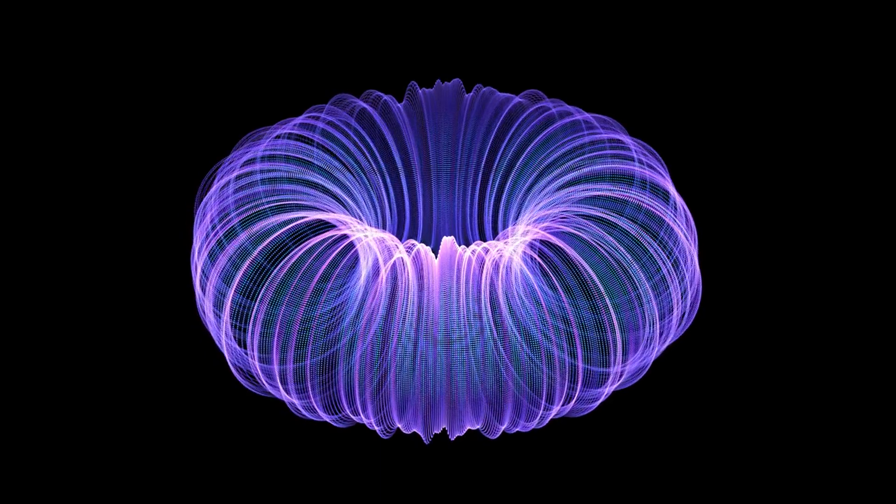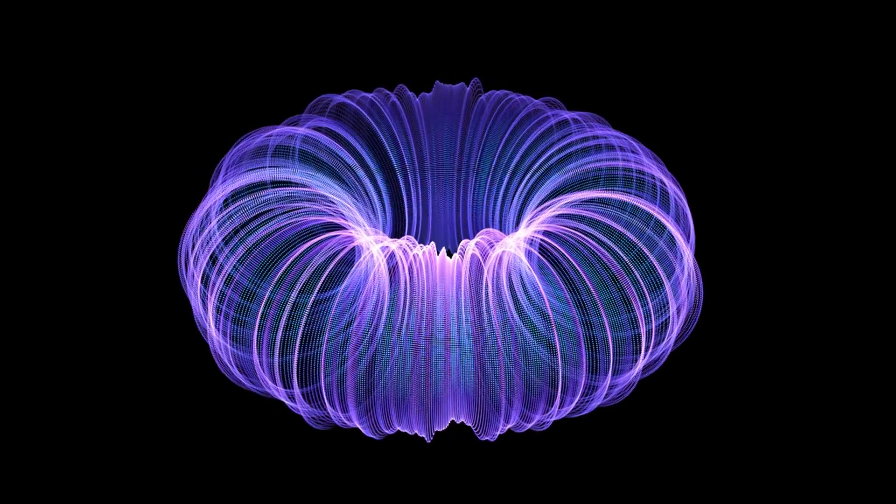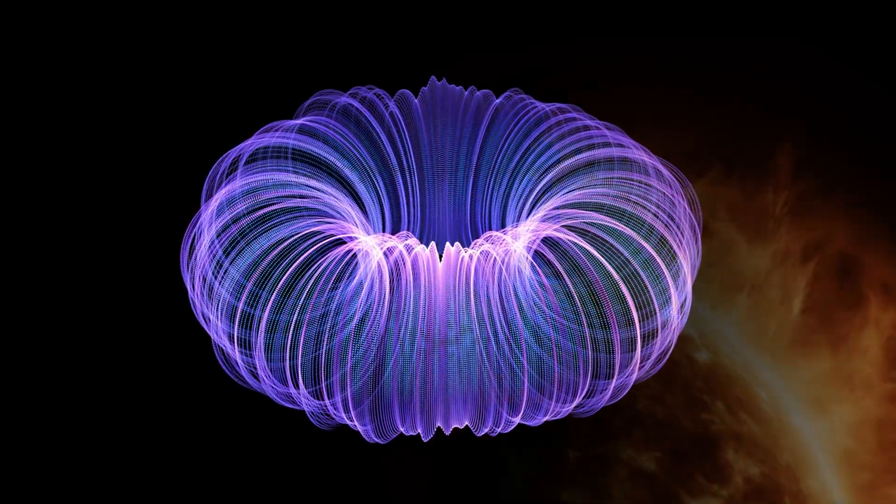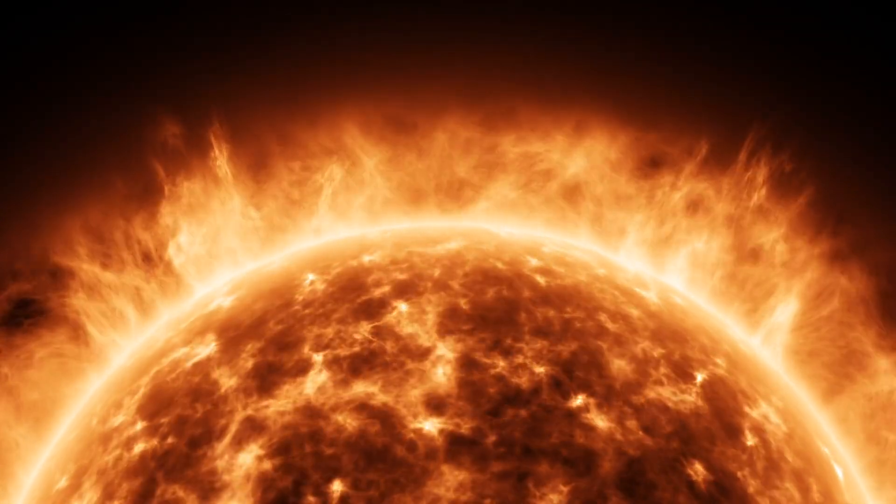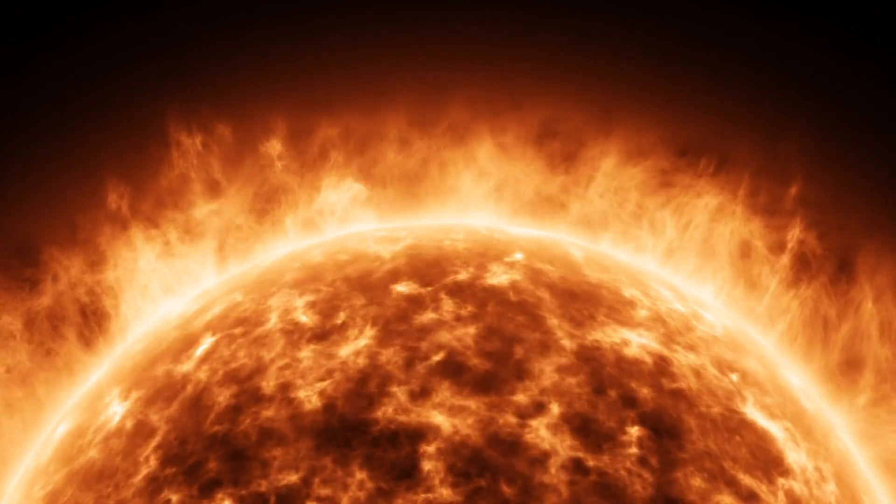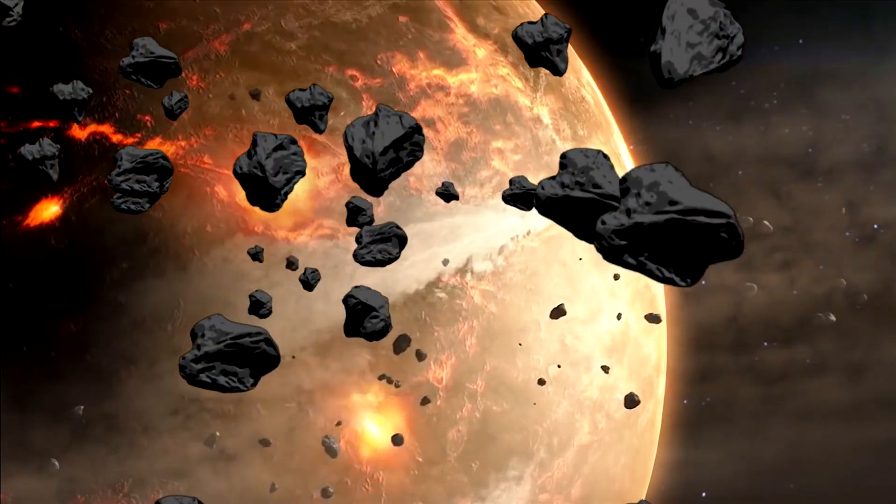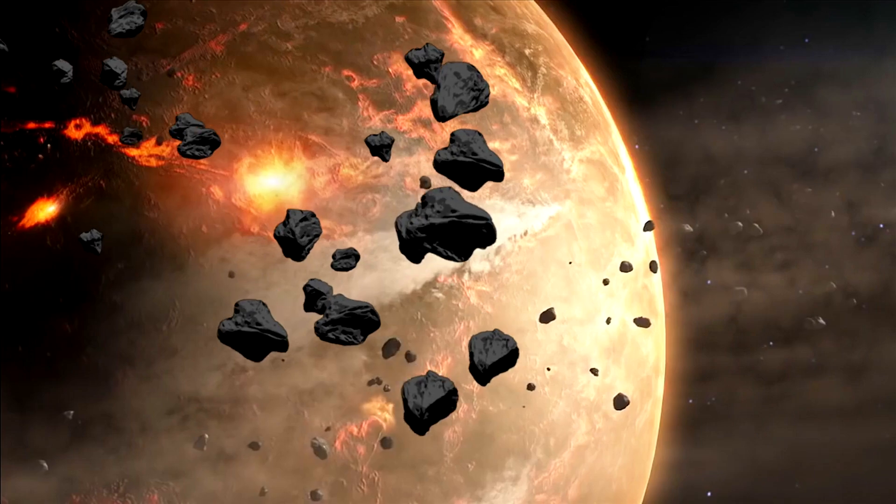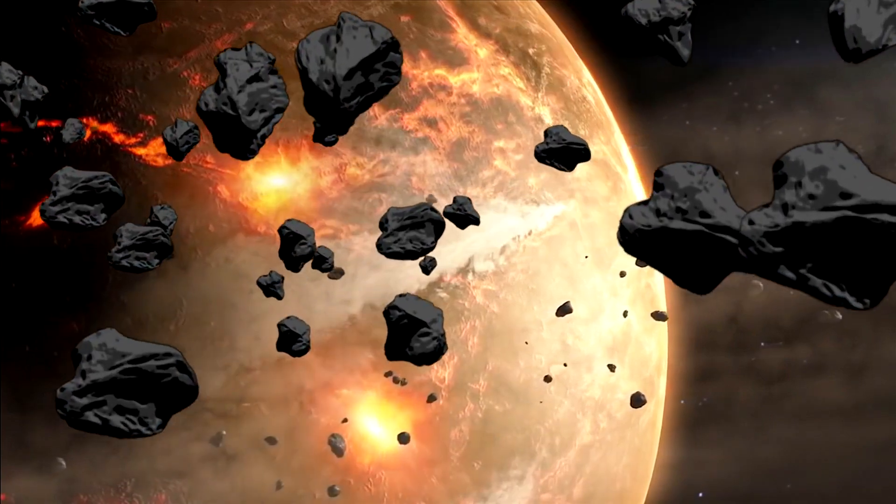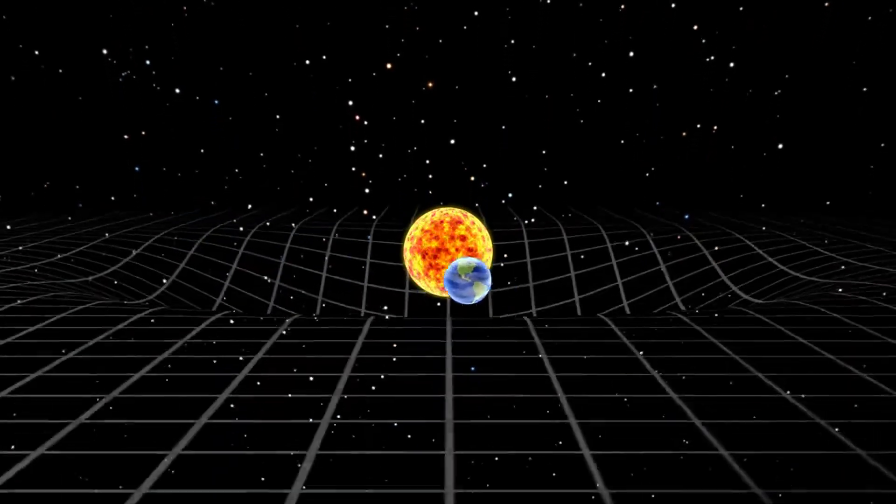At the heart of Betelgeuse, hydrogen fusion converts hydrogen into helium, a process that sustains most stars. As Betelgeuse ages, its hydrogen fuel depletes, leading to the fusion of helium into heavier elements like carbon, neon, and eventually iron. The fusion of iron does not release energy, marking a critical point where the star can no longer support itself against gravitational collapse. This collapse can result in either a supernova explosion or the formation of a black hole.